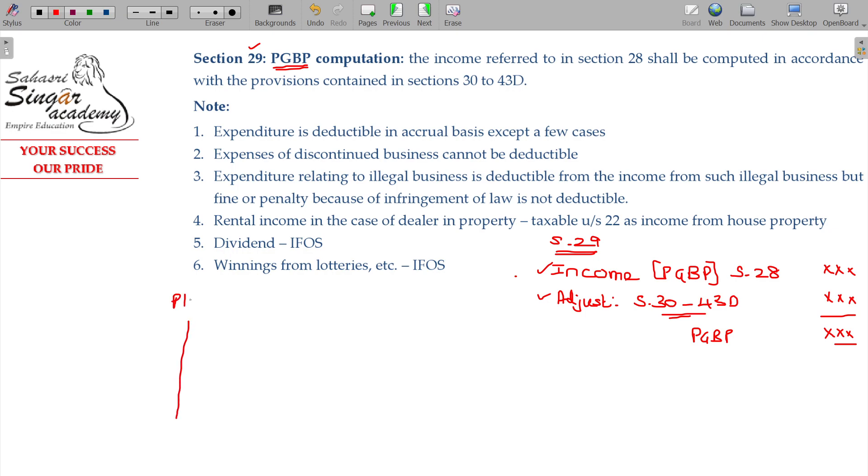If you have a P&L account, you have got the net profit, say 1000. Depreciation put under Section 30 to 43D. Penalty and fine for violating the act over 100 rupees. Rent received over 200 rupees.